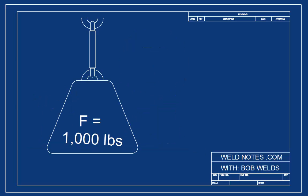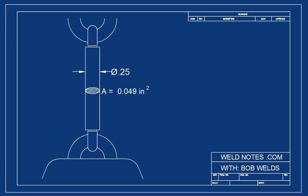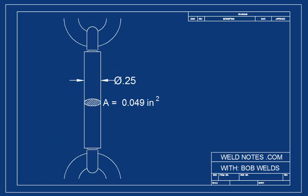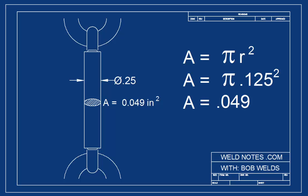Stress is the force being applied divided by the cross-sectional area of the bar. The force is 1,000 pounds and the area of the bar is just a tiny 0.049 square inches. And remember, we can find the area of a circular shape by multiplying pi times the radius squared.